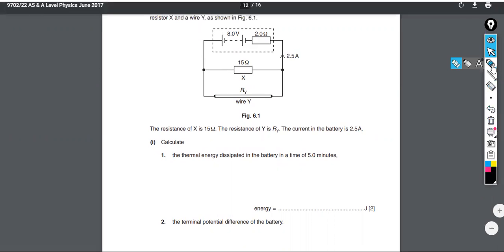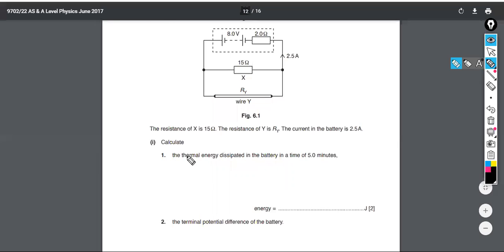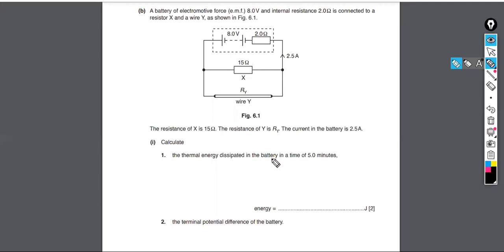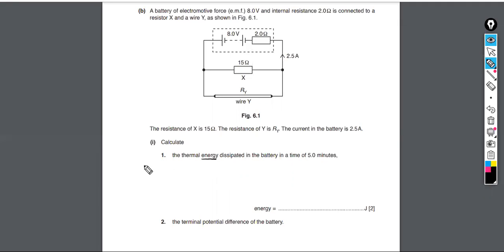The thermal energy dissipated in the battery is the heat the battery is generating — the wasted energy. Since it's dissipated in the battery, that energy per charge — that voltage — is not available externally. We're really being asked to calculate energy due to the internal resistance of the battery.